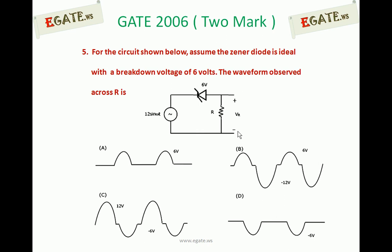For the circuit shown below, assume the Zener diode is ideal with a breakdown voltage of 6 volts. The waveform observed across R is — look at the waveforms A, B, C, D. The Zener diode is supplied with a sinusoidal signal: V input equals 12 sin ωt. If we apply 12 sin ωt to a Zener diode with a breakdown voltage of 6 volts, what will be the output voltage taken across the resistor?